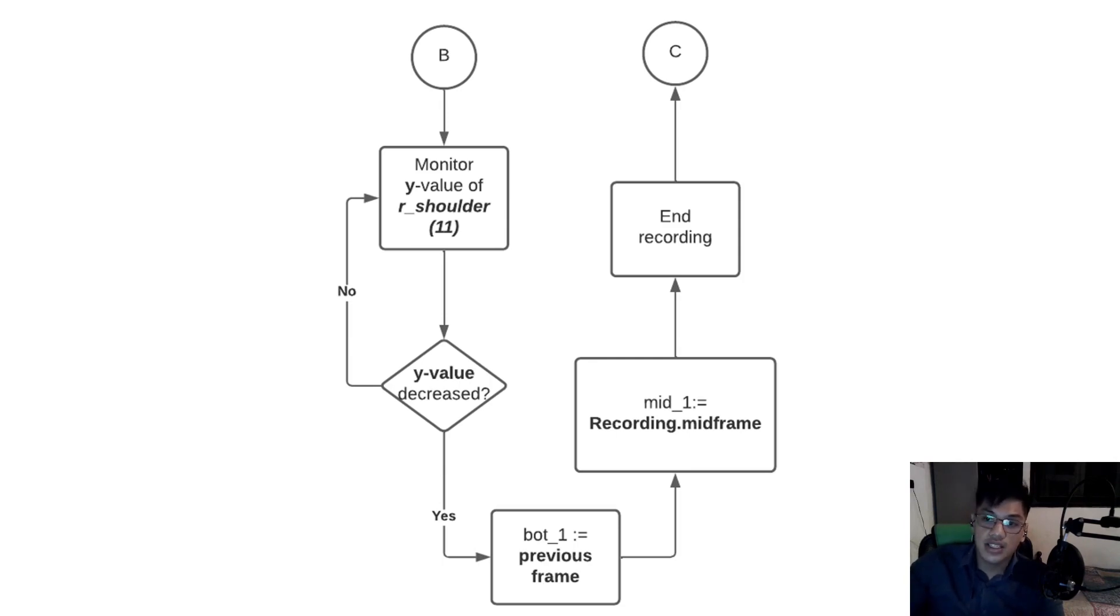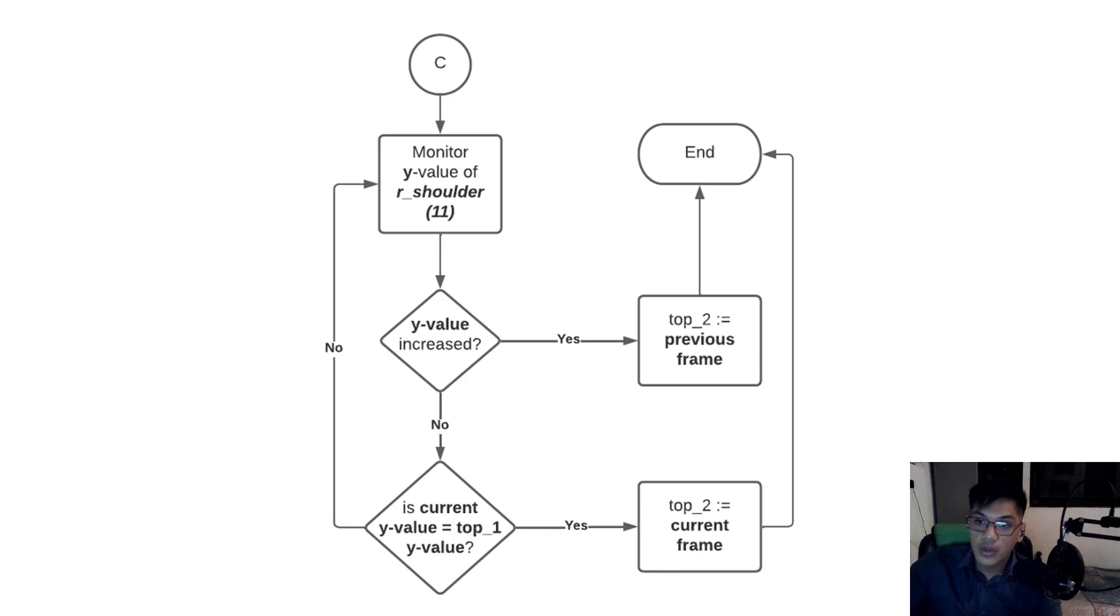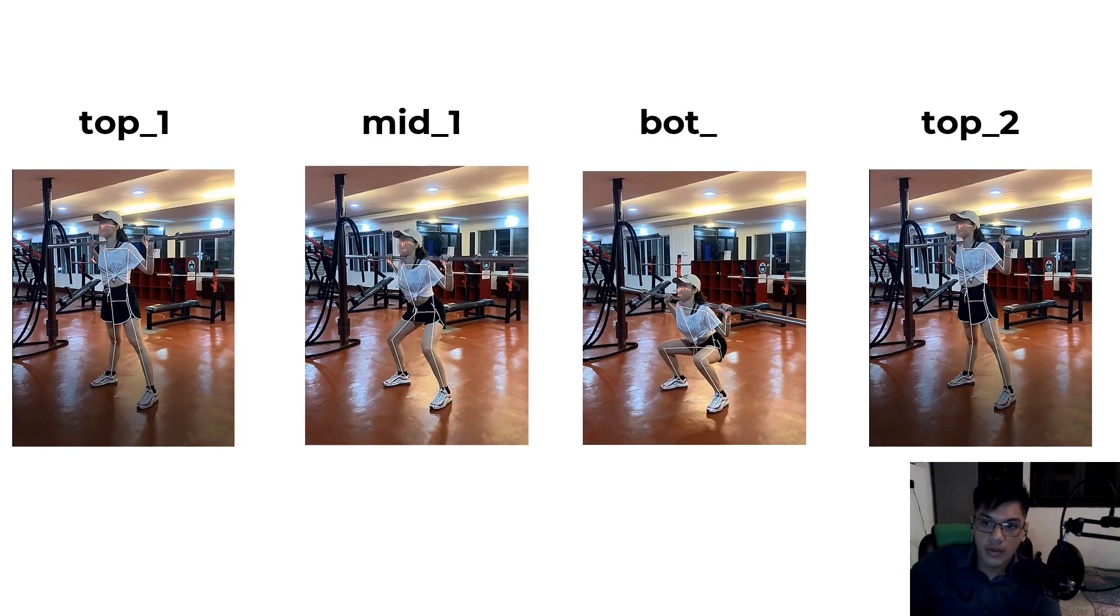By definition, mid 1 is the midpoint between top 1 and bot 1, so we get the midframe of the recording and assign it to mid 1. We then end the runtime recording and move on to finding the final segment, that is top 2. Finding top 2 is essentially the final task here, so we continue to monitor the right shoulder. If the y value increased, this means that the subject failed the squat and is already descending, so we assign the previous frame to top 2 and terminate the whole process. If this isn't the case, we check if the y value of the current frame is equal to the y value of top 1. If it is not, then we continue to monitor the y value of the right shoulder. If it is, then we know that the person is already done squatting, so we assign the current frame to top 2 and terminate the whole process. Regardless of the situation, we ultimately expect the algorithm to give us four images that represent each of the segments.